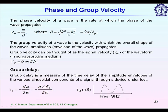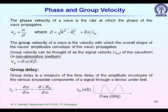If I plot beta versus frequency — beta is two pi divided by lambda g — as frequency increases, lambda g decreases, so beta should vary linearly with frequency. If beta does not have a linear variation, then the phase velocity will be different at different frequencies.